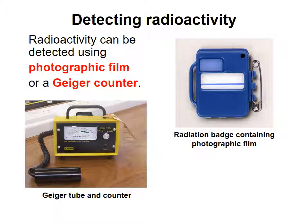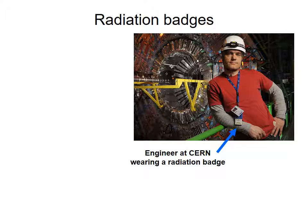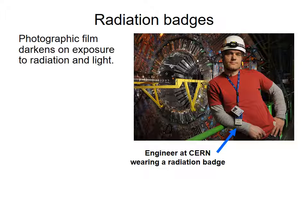Or using something like a Geiger-Muller tube, which is the image at the bottom of the page here. So radiation badges. Essentially, these are photographic films which darken on exposure to radiation and light. This man here working at CERN has a badge which basically changes color if there's a leak in radiation.